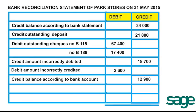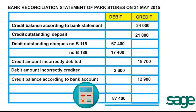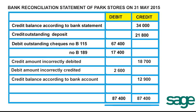Let's see whether we are balanced or not. After adding up the debit side, we get an amount of R87,400. After adding up the credit side, we also get R87,400. So it does balance. Therefore we know that our bank account has been reconciled with that of the bank statement.